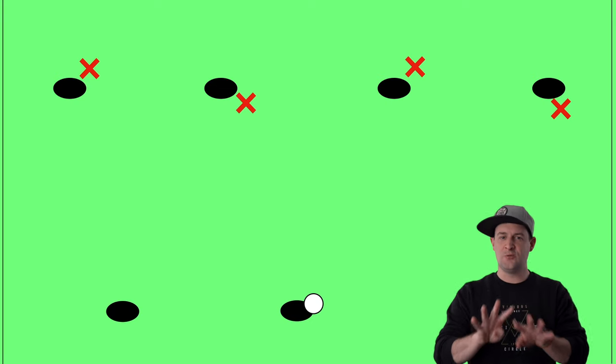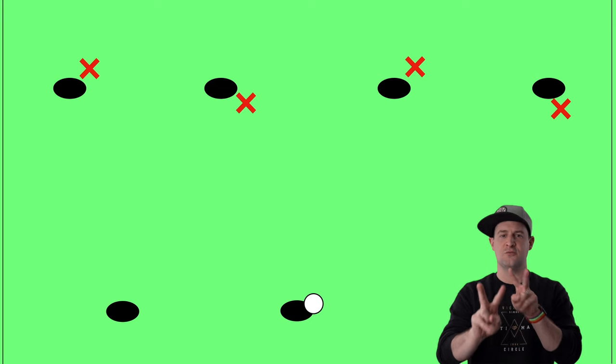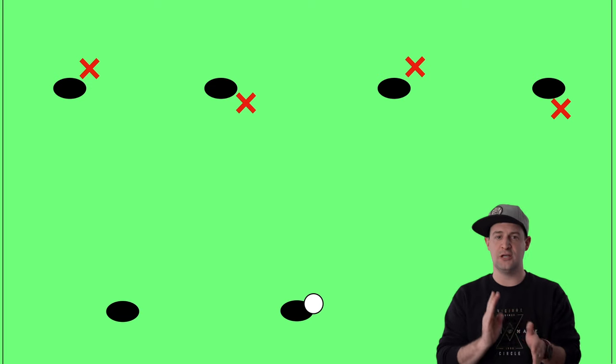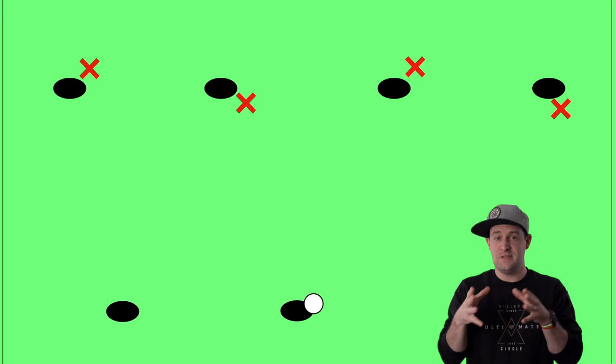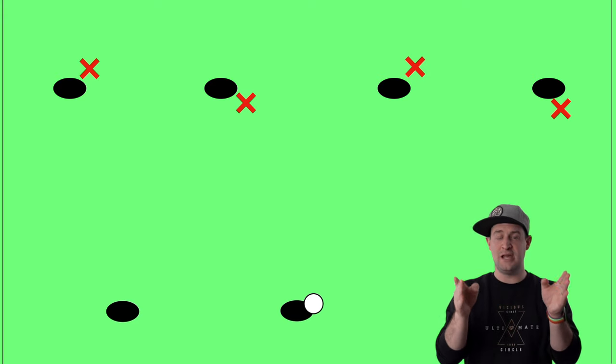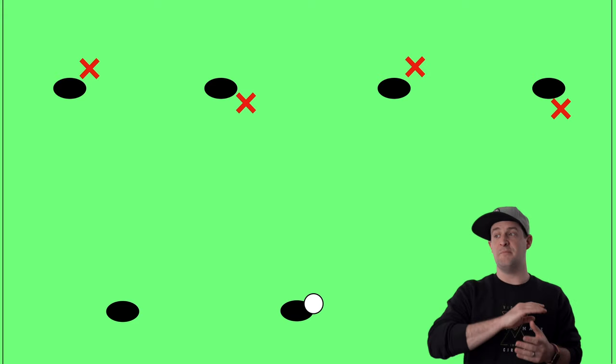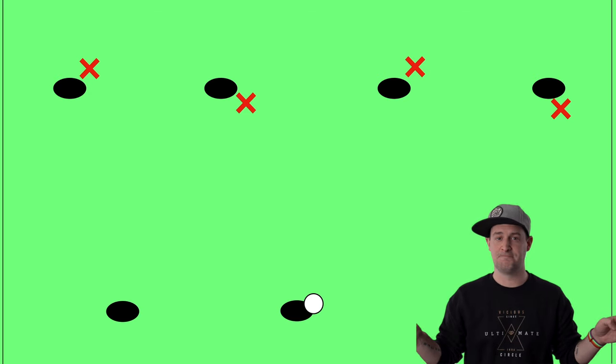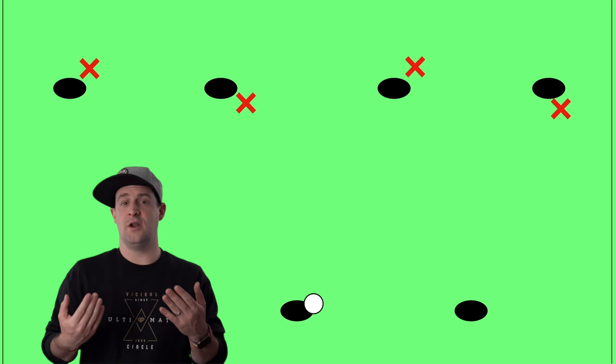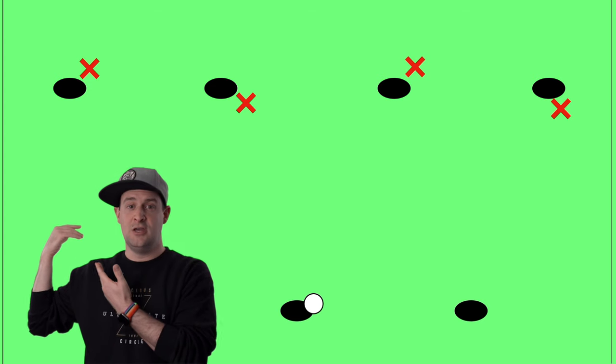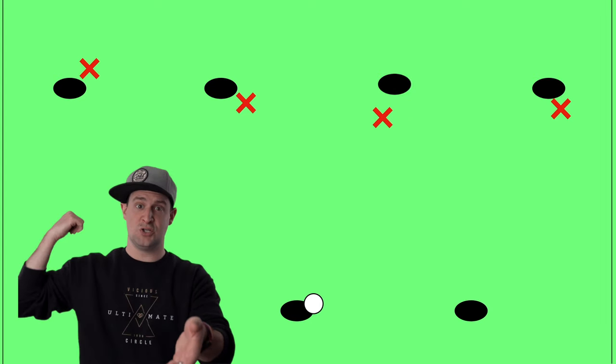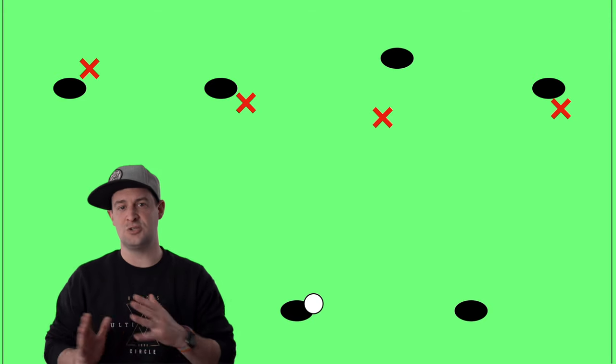So when the disc is centered, you're going to want that general piston motion. But again, we don't want running just for the sake of running back and forth. We want to be looking for opportunities communicating. But those middle two cutters, the middles or the poppers, are going to be the primary looks when the disc is centered. Because if we can keep the disc in the middle of the field, we always have more options than if the disc gets pushed to the sideline. So if the disc is already in the middle of the field, keeping it to one of the middle two players is going to be better for us in general than making a throw all the way to one of the wings and getting the disc against the sideline. So those middle cutters need to work together to figure out who's going to cut.